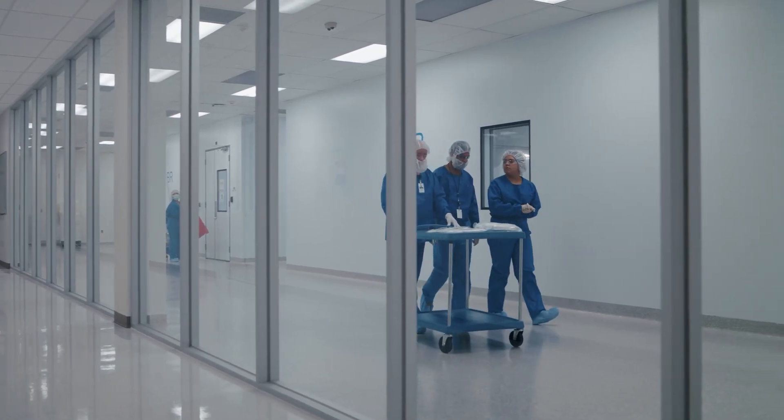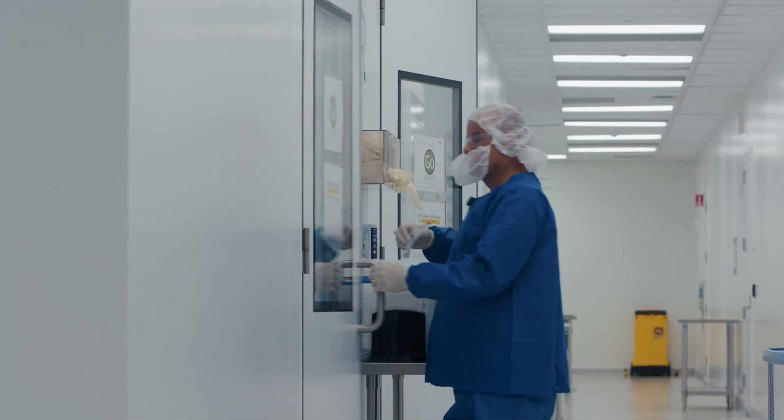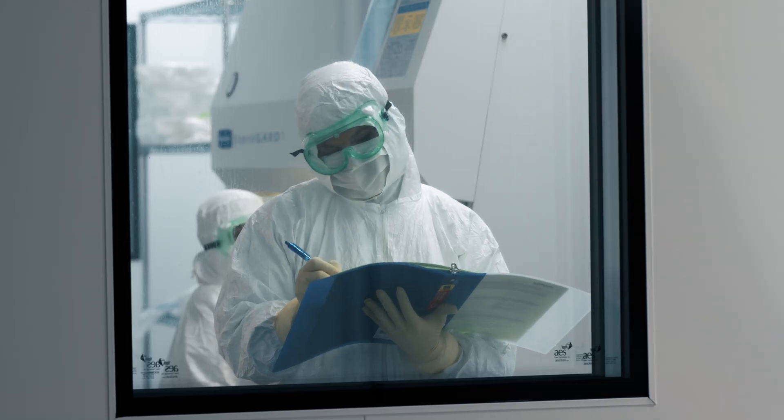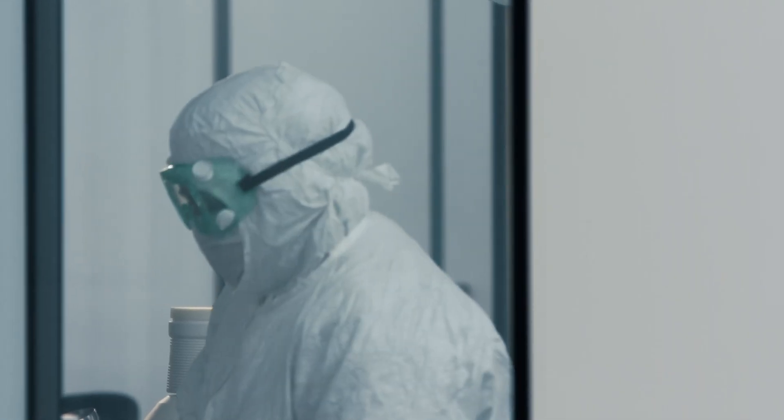When we are ready to tech transfer in a process, we provide draft bill of materials as well as a process development report that outlines all the key process parameters and quality attributes that need to be maintained as the process transitions to the manufacturing floor.